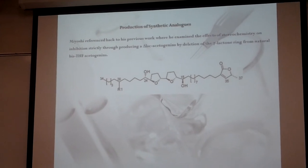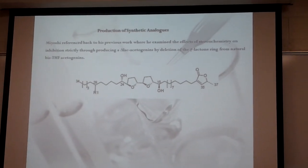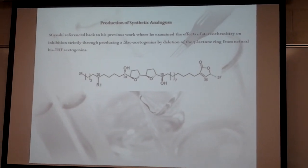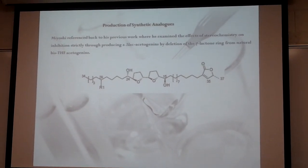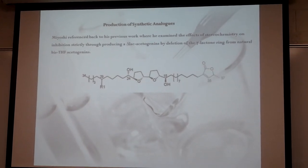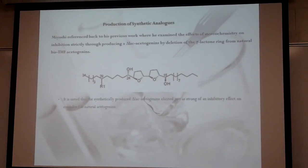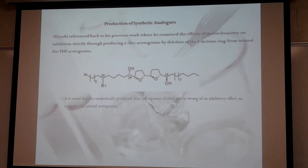Miyoshi travels back to his previous work where he created a delta-lactone by deletion of a gamma-lactone. As you can see, this is the gamma-lactone. He deleted that and focused on inhibition from there.